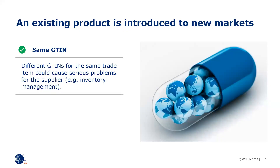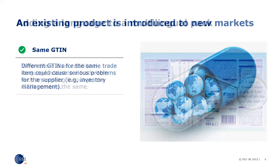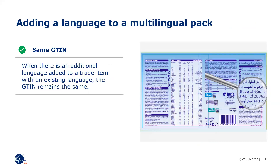When an existing product is introduced to new markets, in general a new GTIN is not required. We do, however, need to consider local regulatory requirements and languages. When adding a language to a multilingual pack, a new GTIN is not required. The language rules cover the language printed on the package itself, as well as manuals or inserts that are considered part of the trade item.